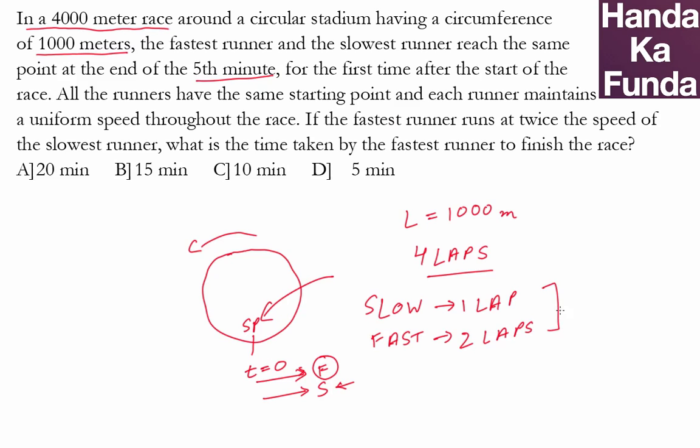And how much time has this taken? This has taken five minutes. So the fast guy does two laps in five minutes. The slow guy does one lap in five minutes.